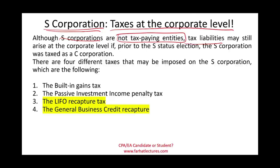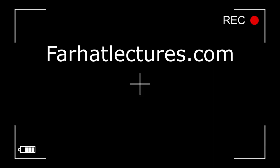This usually happens when there is a switch from a C corporation to an S corporation. In the prior session, we looked at the built-in gains tax and the passive income penalty tax. In this session, we'll look at LIFO recapture tax as well as the general business credit recapture.